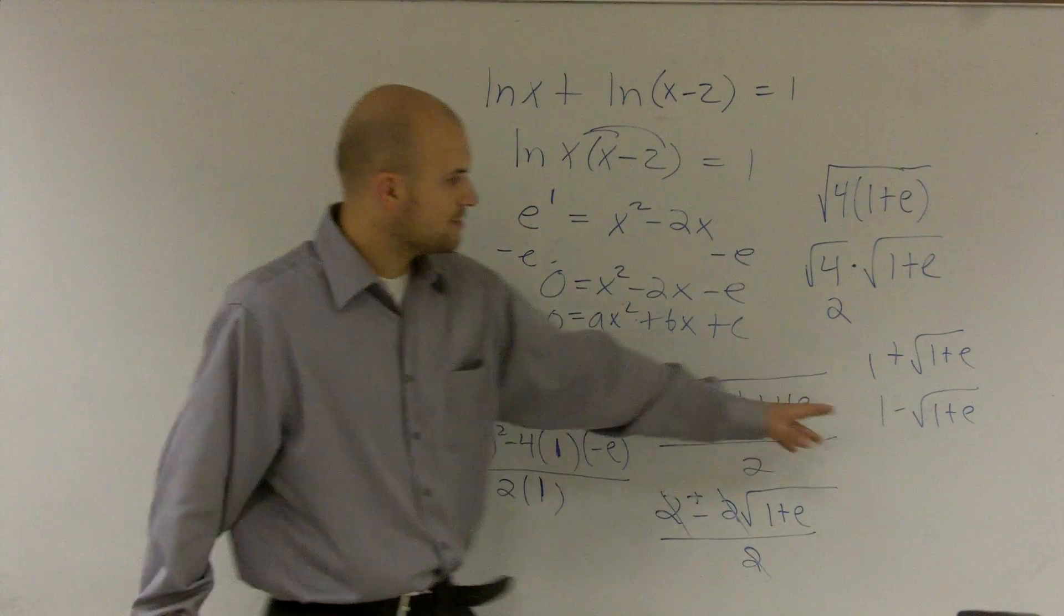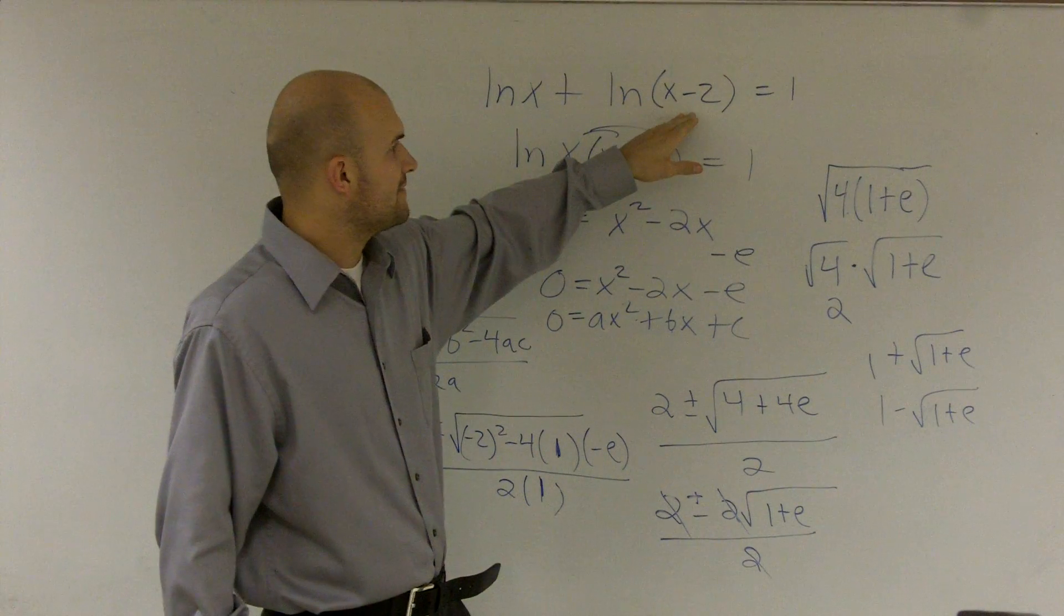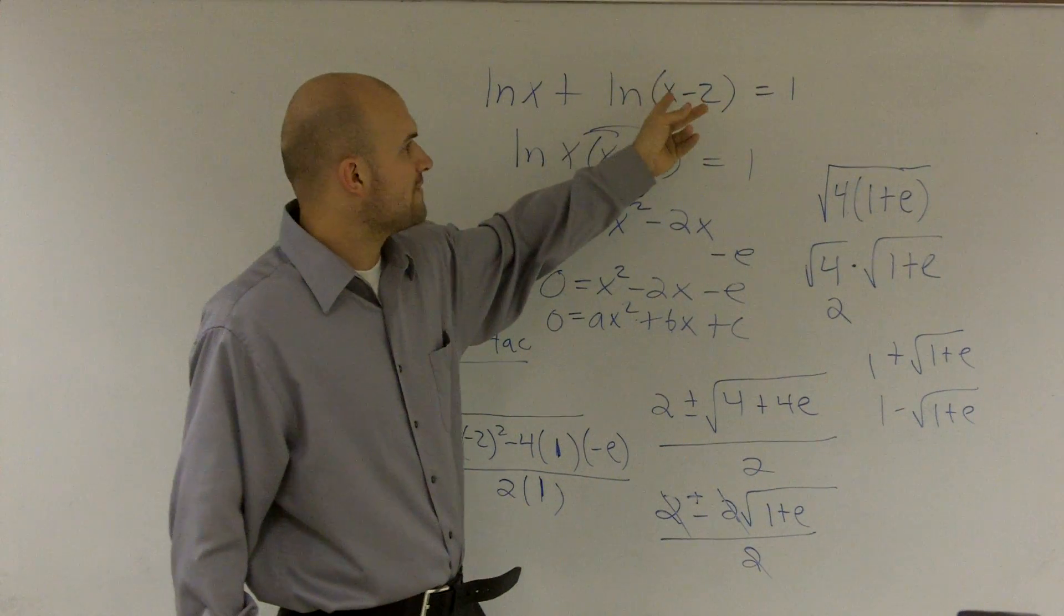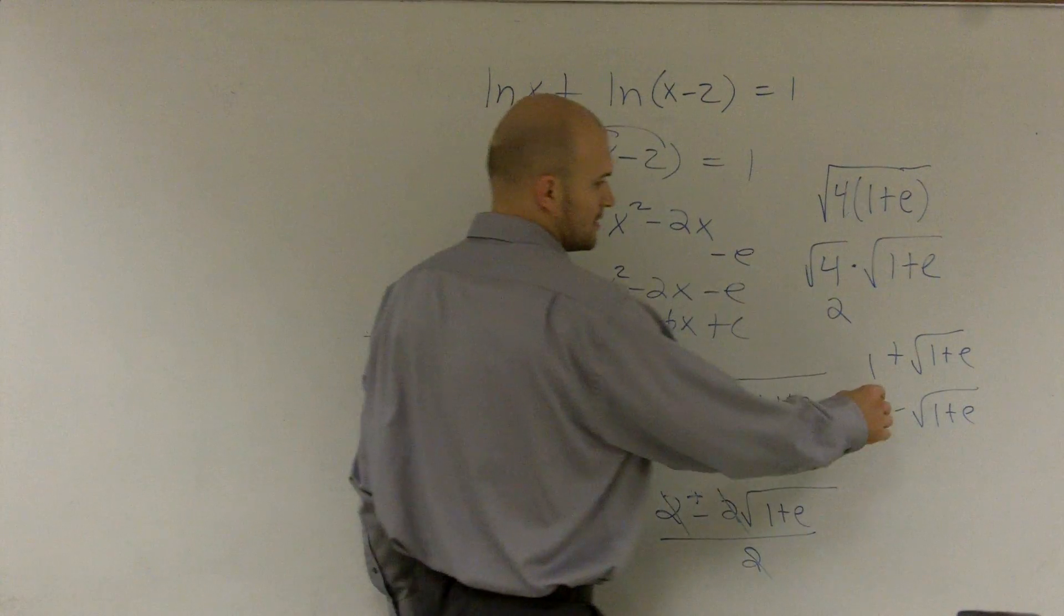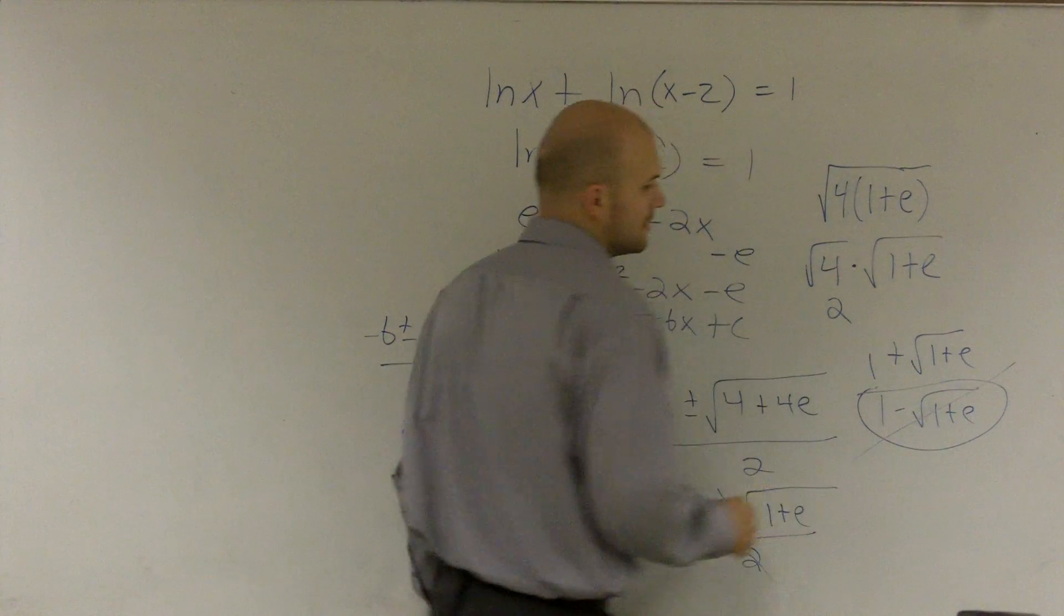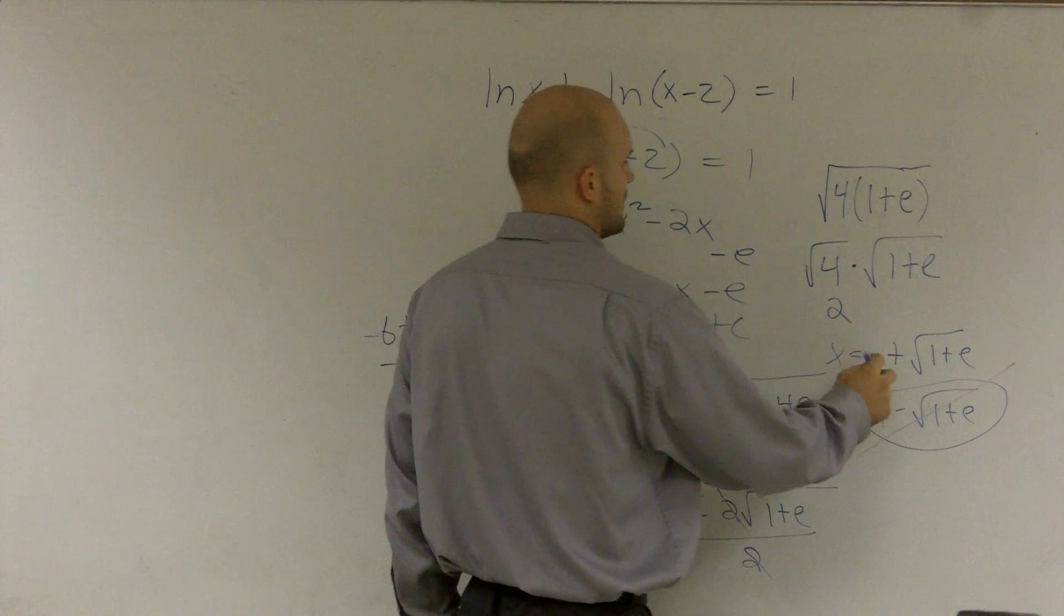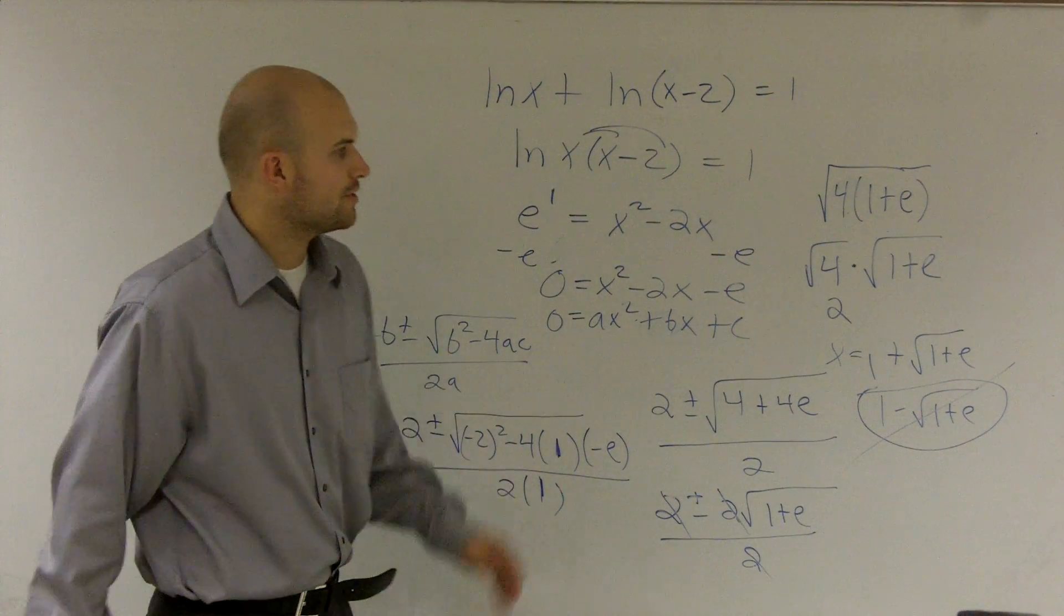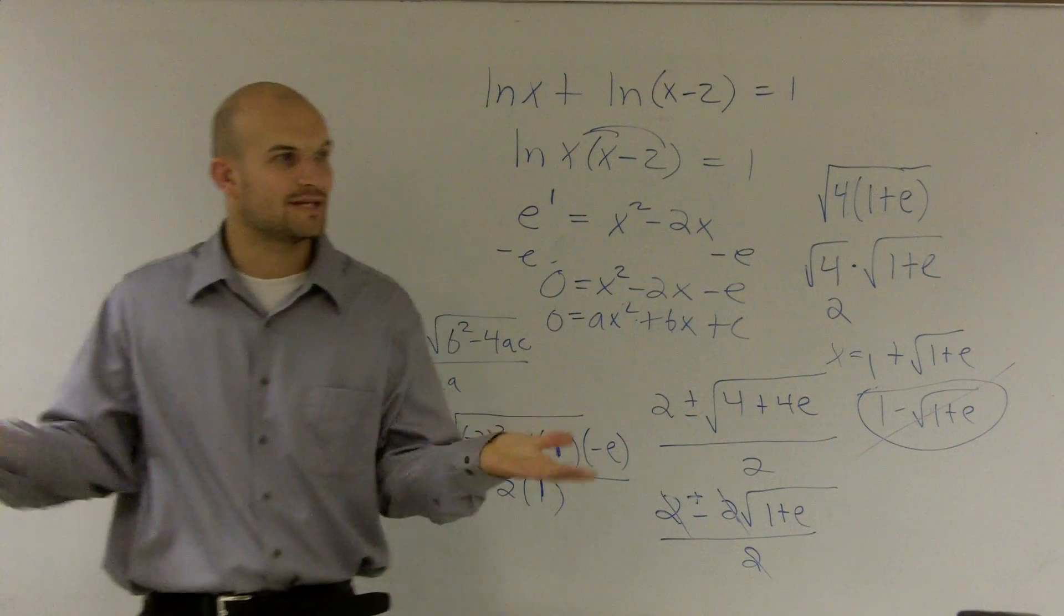And what we notice is when we figure out this answer, it's going to be a negative number. And since we're taking our value subtracting 2, that's going to make it more negative. Therefore, we can't evaluate it. So this answer is not a solution. So therefore, x equals 1 plus the square root of 1 plus e is our only solution.